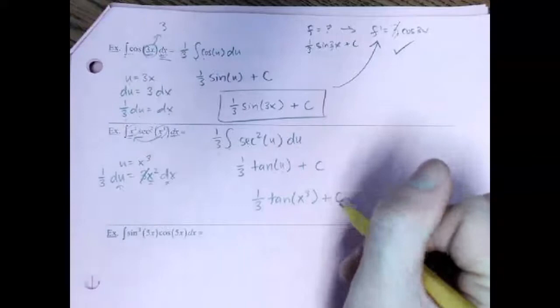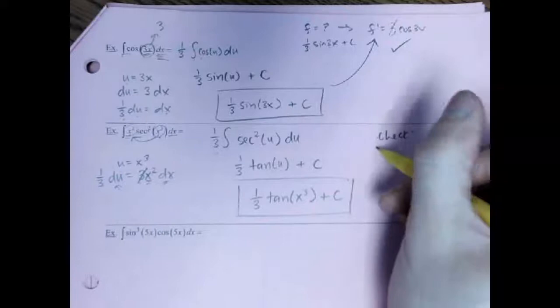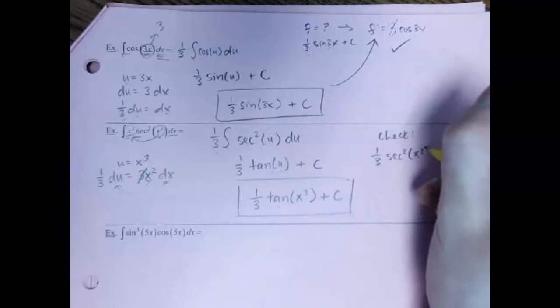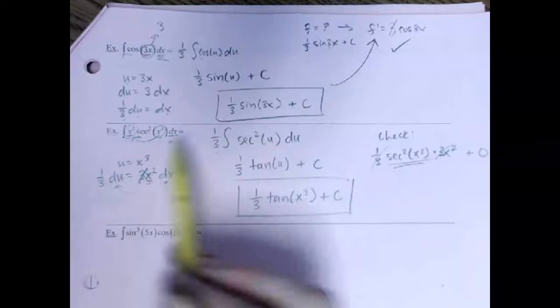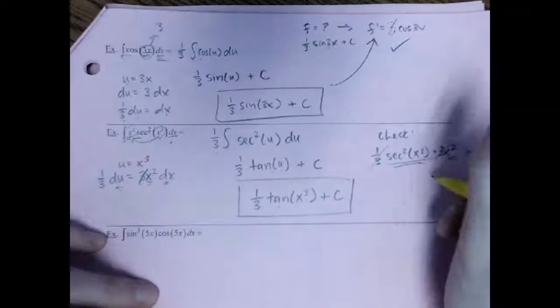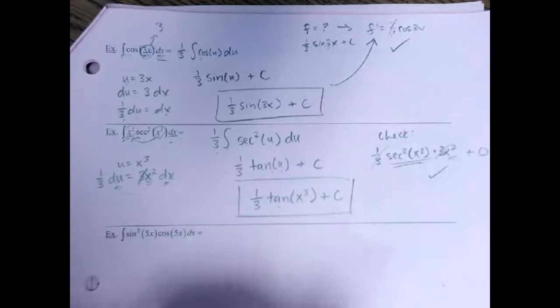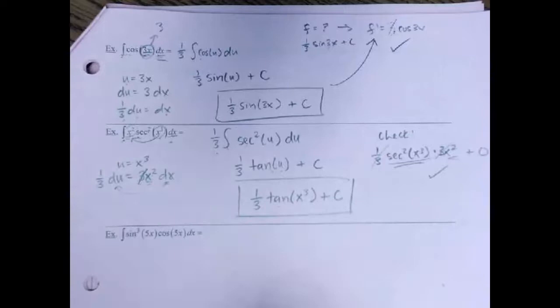Let's check it by taking a derivative. The 1/3 just copies. If you have a tangent, the derivative would be secant squared of that stuff. Then that inside stuff you would need to account for with chain rule. The 1/3 and the 3 would cancel, but you'd be left with secant squared of x cubed, and you'd have that extra x squared — which is what we began with. These u-sub questions are kind of repetitive, but you'll eventually get the hang of it. They're not too bad. If you take calculus 2 or BC, it will get worse — we learn much harder techniques of integration. U-substitution is kind of just the easiest.